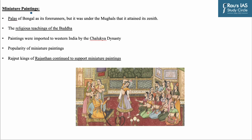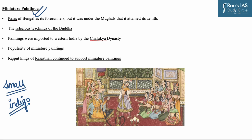Let us discuss some basics related to miniature paintings in India. Miniature paintings are bright, individually created small works of art. The colors utilized come from a variety of organic materials including fruits, indigo, precious stones, gold and silver. The Palas of Bengal are considered as the forerunners of miniature paintings in India.